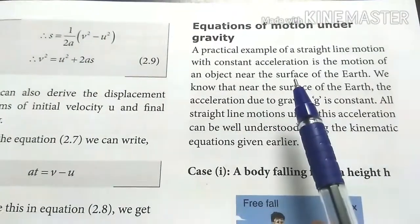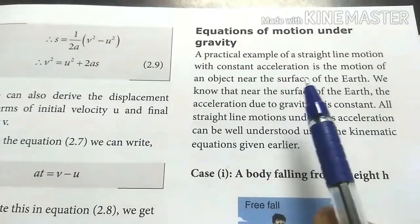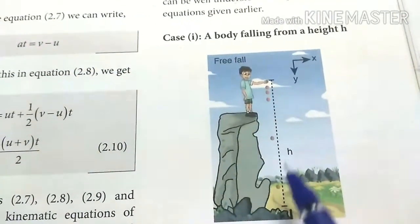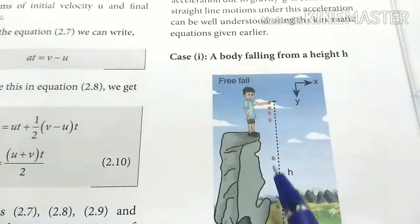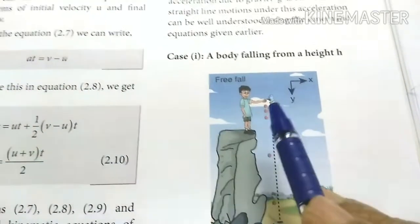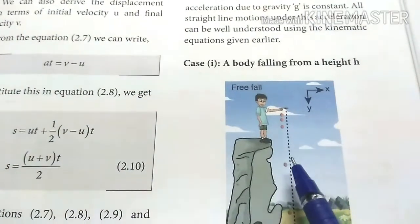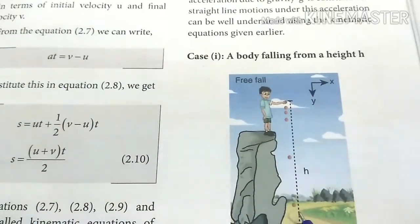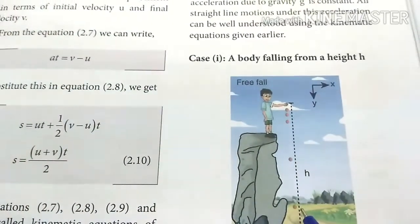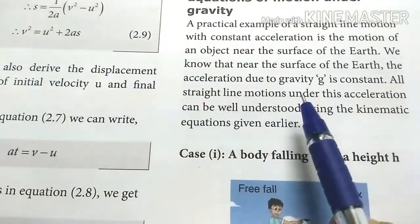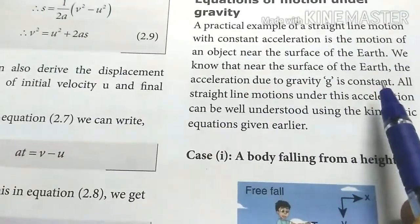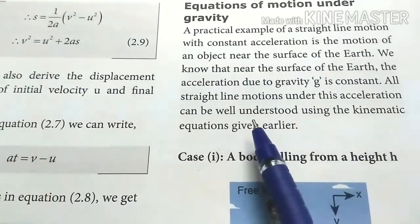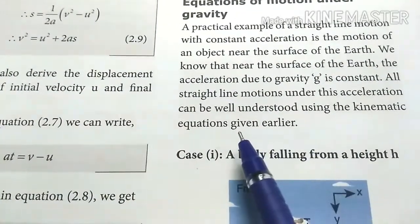A practical example of straight line motion with constant acceleration is the motion of an object near the Earth's surface. If you look at an object moving in a straight line from the ground to a particular height, the acceleration due to gravity g is constant. So the particle moves with constant acceleration near the surface of the Earth. All straight line motion under this acceleration can be understood using the kinematic equations discussed earlier.